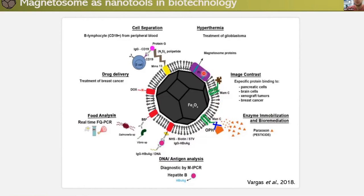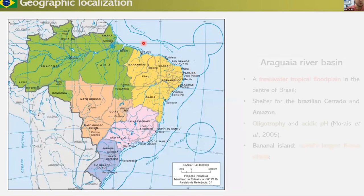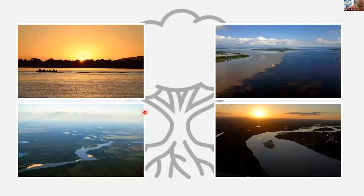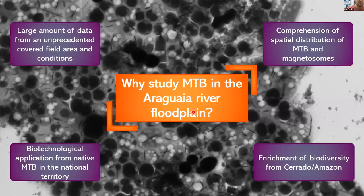Talking about our work and geographical localization: this is the map of Brazil and our area of study is on the Araguaia River, right in the middle of the country. We are located in Rio de Janeiro at UFRJ. The Araguaia River is oligotrophic, meaning it has low nutrients and acidic pH. The Bananal Island, located within this area, is the world's largest fluvial island. Here are some aerial photographs of the place — a very beautiful place.